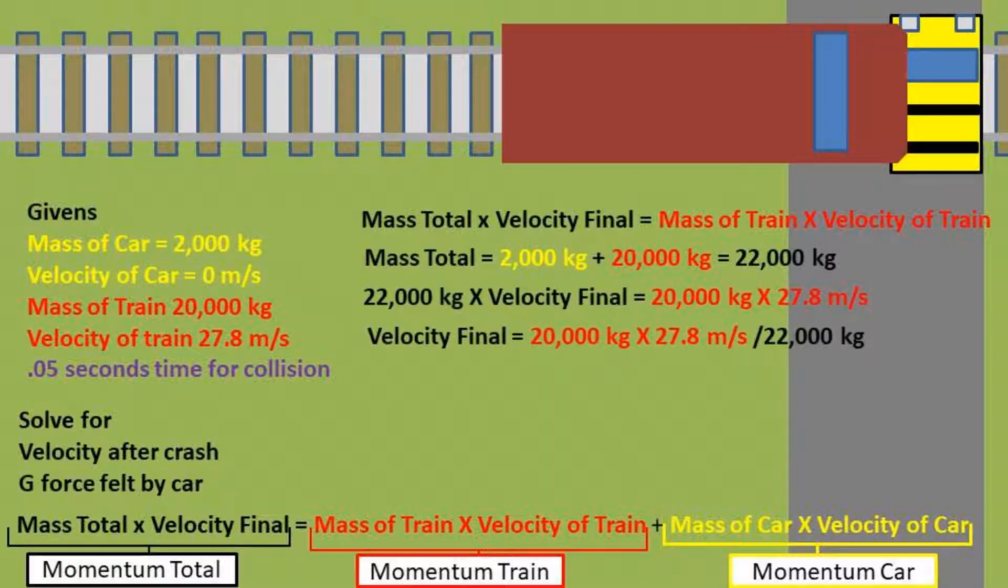We can now plug in the mass total and rearrange the formula to have velocity final to one side. After plugging all of our numbers into our calculator, we are left with the velocity final being equal to 25.27 meters per second.